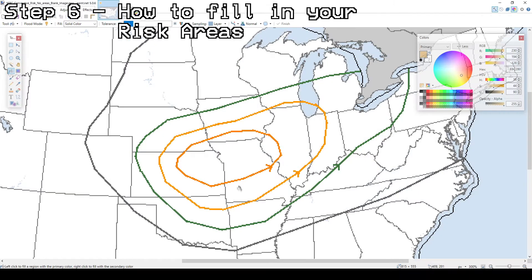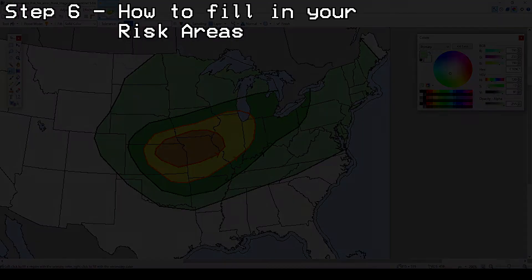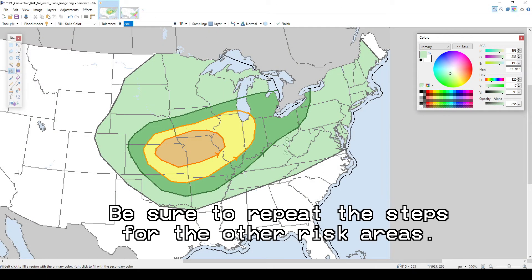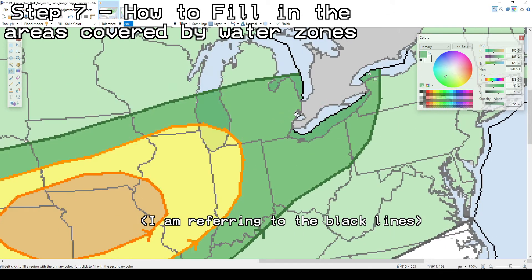Once you have those settings, start filling in the areas covered by land only. Now it is time to fill in the areas covered by the waters, such as the Great Lakes and the oceans. This step uses the same process and tools as the previous step. All you have to do is find the hex color codes for the water areas on my website and then fill in the corresponding risk areas. I provided a blank map template that includes the boundaries of the water forecast zones served by US National Weather Service offices, which makes it easier and more convenient to do this step accurately.